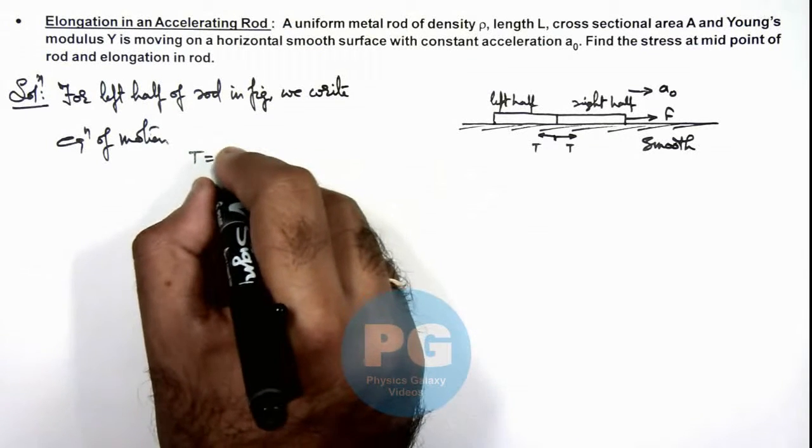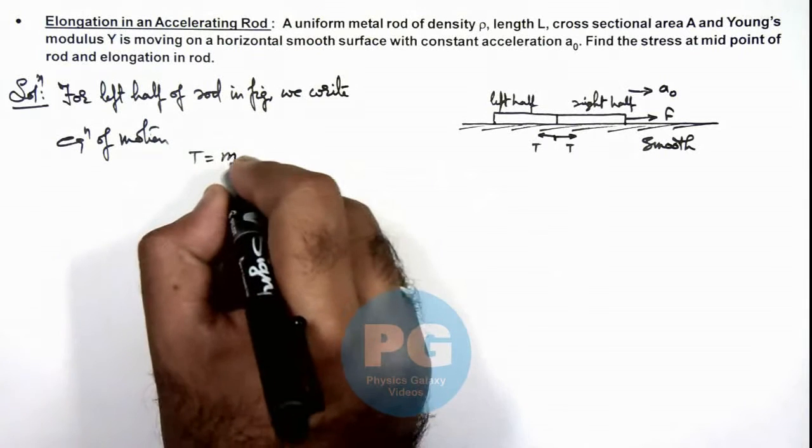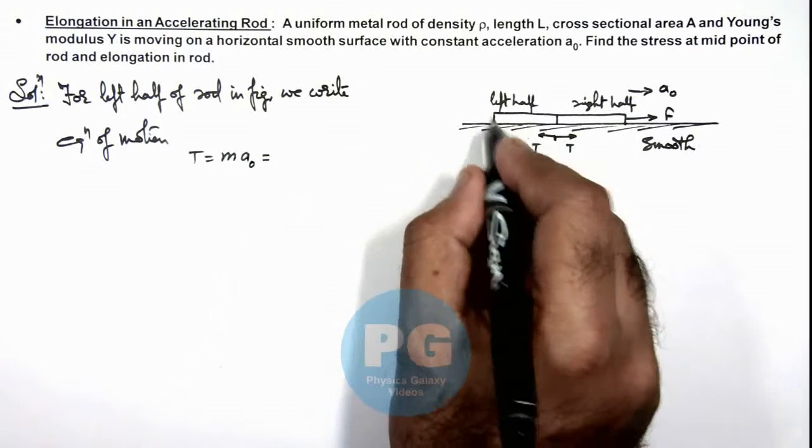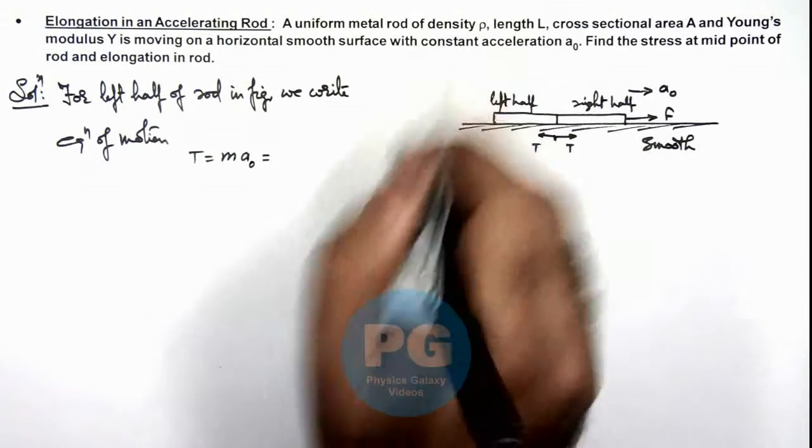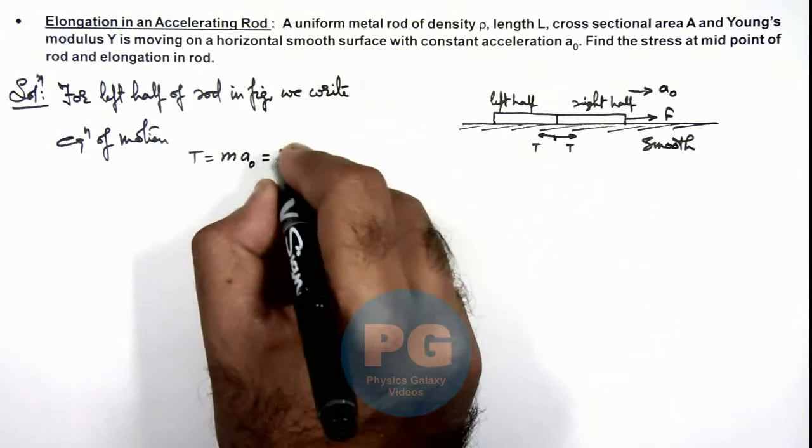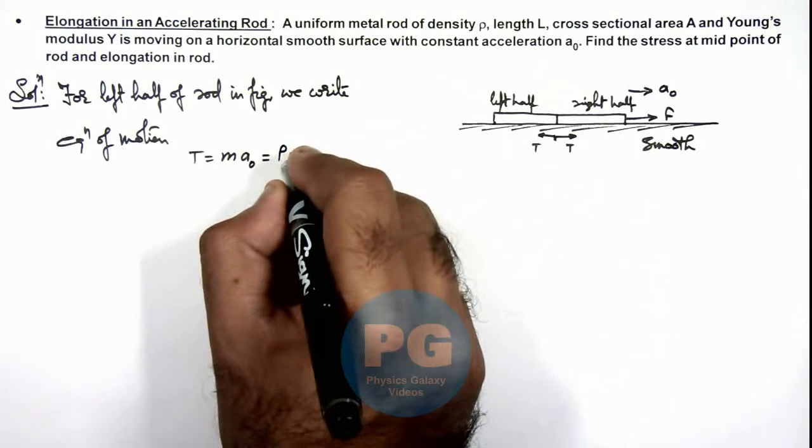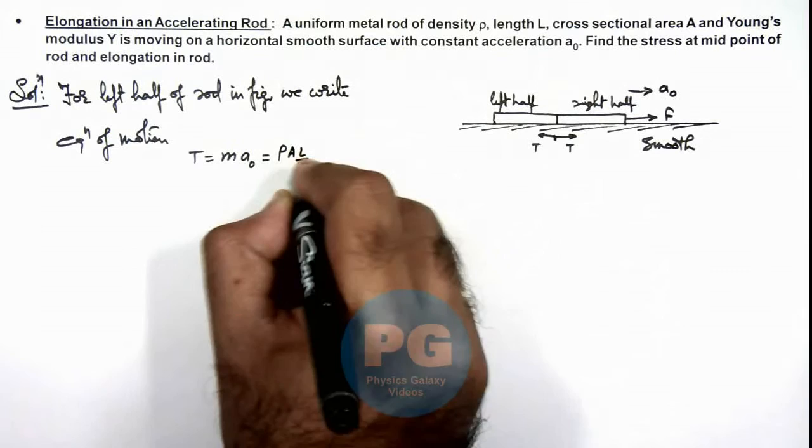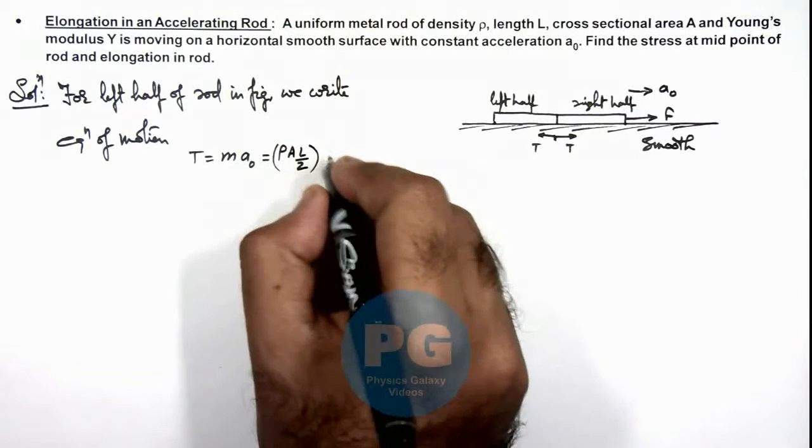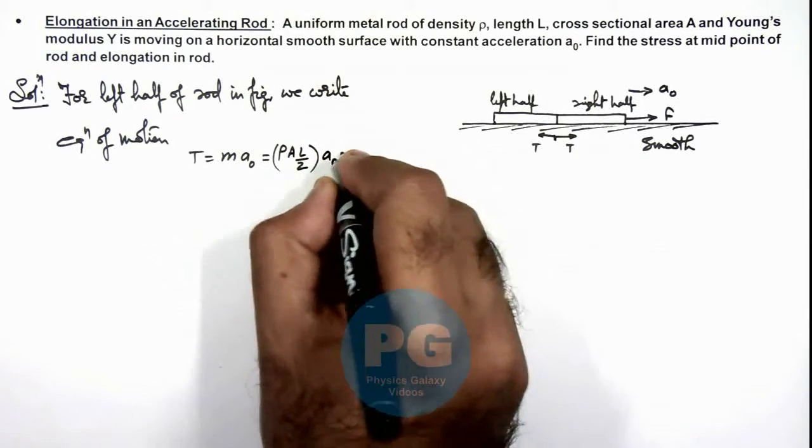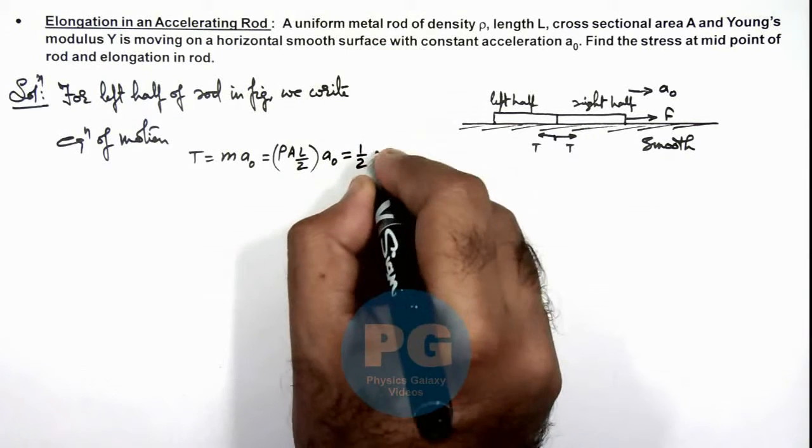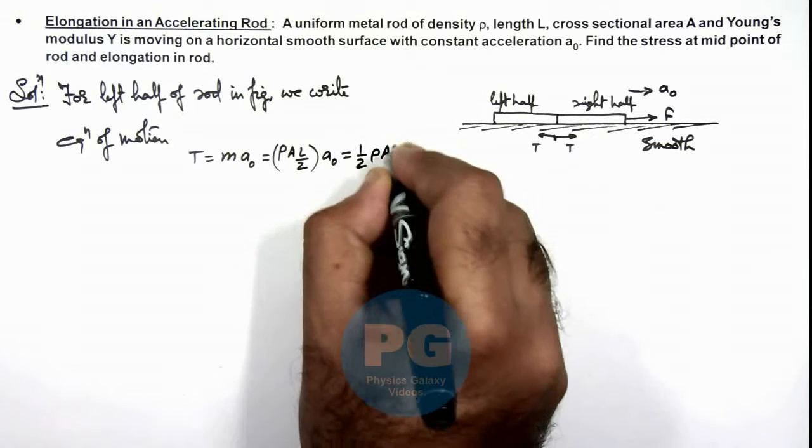we can write its mass as m, so this will be m multiplied by a₀. Mass of this half of rod will be its volume multiplied by density, so this can be written as ρ multiplied by cross sectional area multiplied by L/2, which is the mass of this left half, multiplied by a₀. This is giving us the tension at the mid point which is ½ρALa₀.